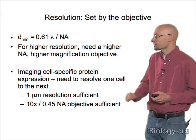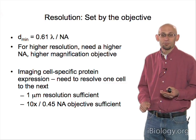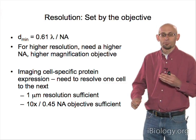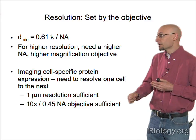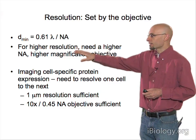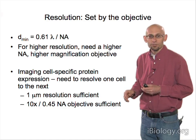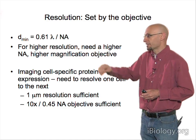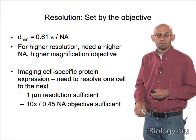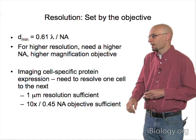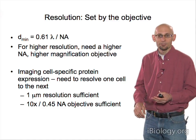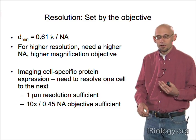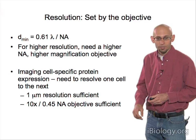Resolution is set by the objective of your microscope, and most microscopes have many different objectives. As discussed in other lectures, the resolution of the objective is 0.61 times the wavelength you're imaging at, divided by the NA of the objective. For high resolution you need a high NA objective, which generally goes along with high magnification so you can sample the data well enough with your camera.